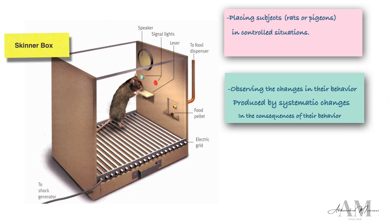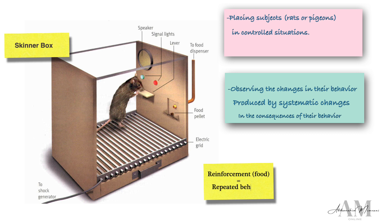The box was equipped with a lever or bar that the rat could press. Initially, the rat might accidentally press the lever and as a result receive a food pellet. Skinner observed that the rat would quickly learn to associate the action of pressing the bar with the reward of obtaining food. Consequently, the rat would continue to press the bar repeatedly, displaying an increase in this specific behavior.